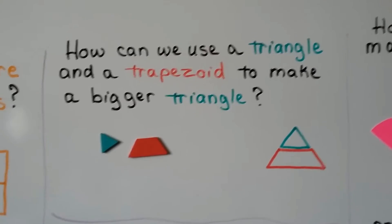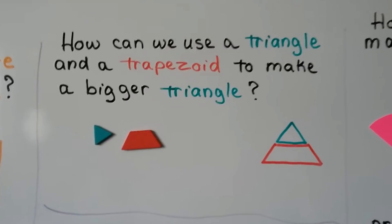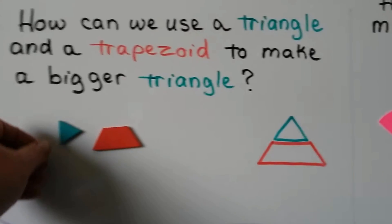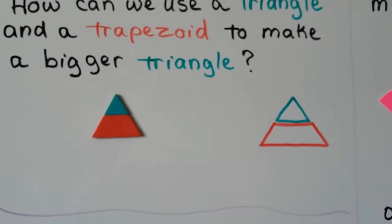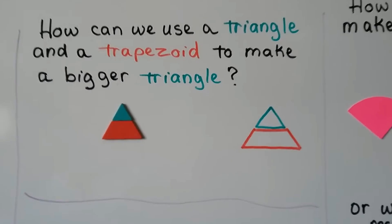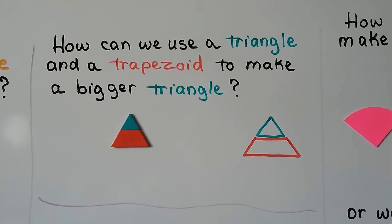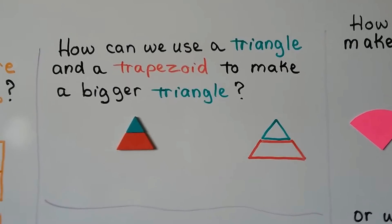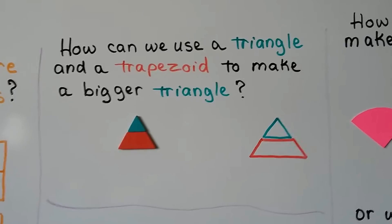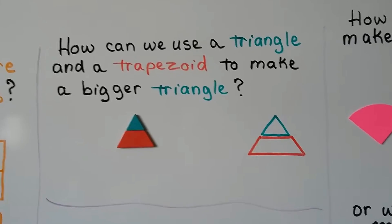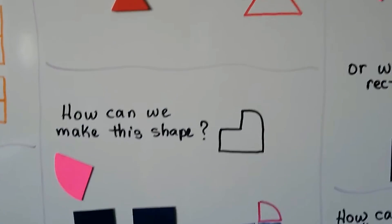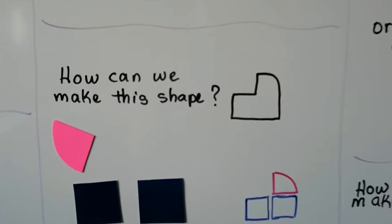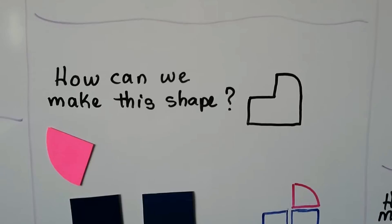All we have to do is put the triangle on top of the trapezoid — look at that — and it makes a bigger triangle. How can we make this shape?